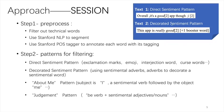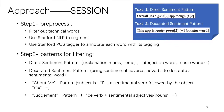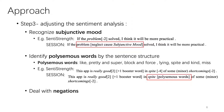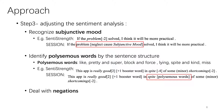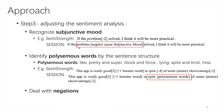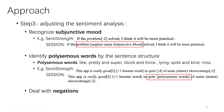Step 3: Adjust the sentiment analysis. We proposed to use sentence structures to adjust the results of SentiStrengths. Here are three adjustments: recognize subjunctive mood, identify polysemous mood by sentence structures, and deal with negations. We can see that the negative sentiments of the word 'problem' in the sample will be ignored because it is in the subjunctive mood. The word 'spite' will be considered to express a turning relationship, so it won't be labeled as negative.